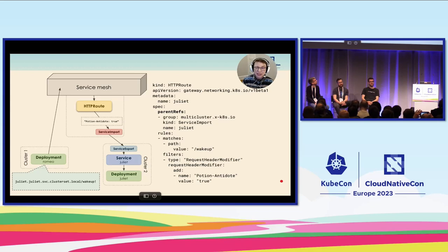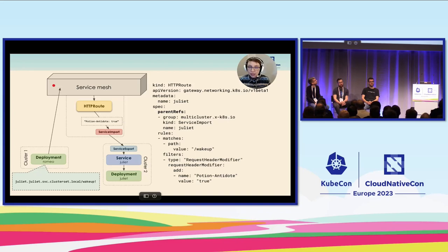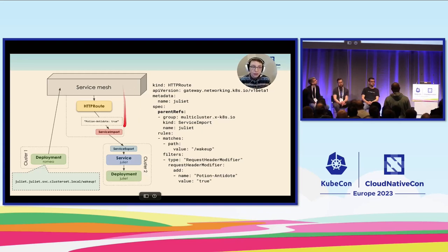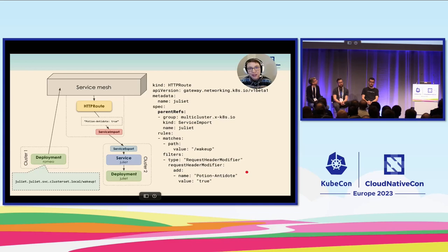To give an example about Gamma: service meshes that conform to the Gamma specification now have a way to interact with multi-cluster services from the MCS API and the traffic routing rules on the Gateway API by respecting routes that have a ServiceImport as their parent ref. By binding this ServiceImport in the parent ref, this indicates that the service mesh should intercept traffic destined for this ServiceImport and apply these Gateway API-expressible rules. For example, a rule to match a path and add a header — if only the Romeo service had been configured to add a potion-antidote header when attempting to wake up the Juliet ServiceImport upstream, perhaps the tragedy could have been averted.